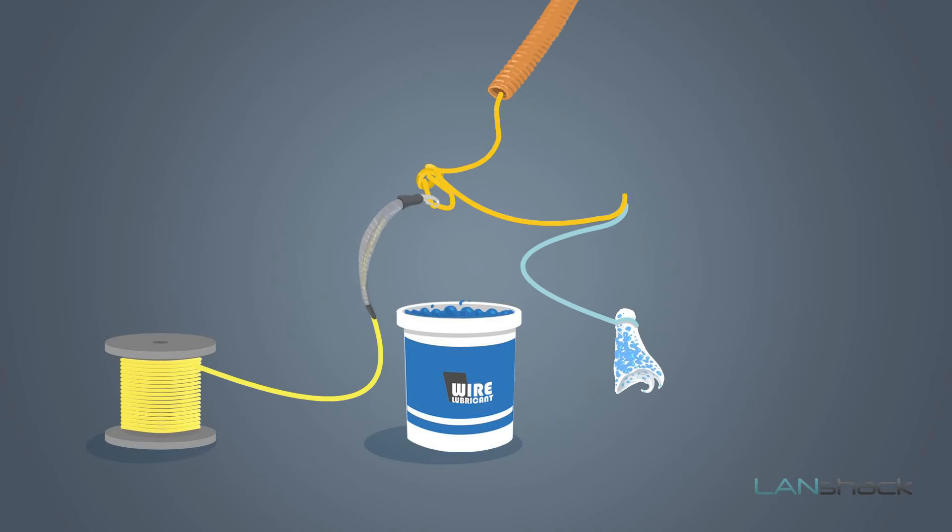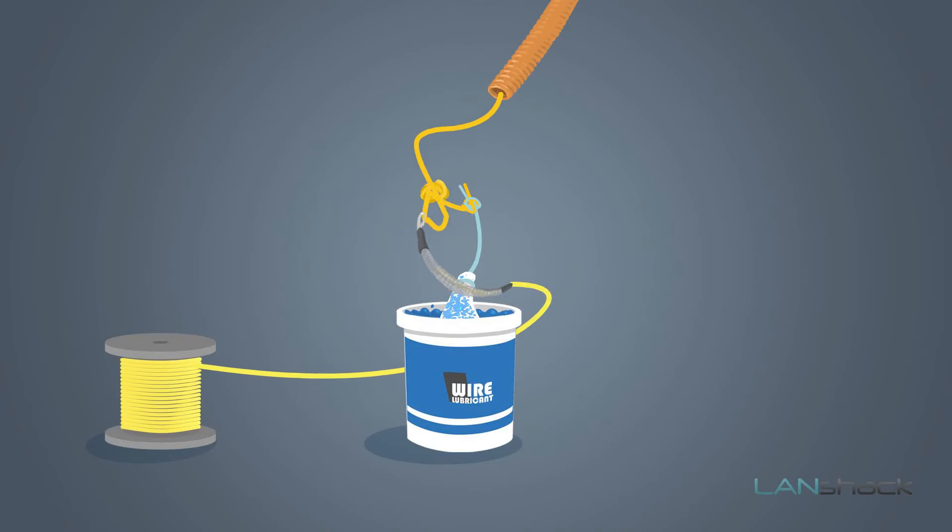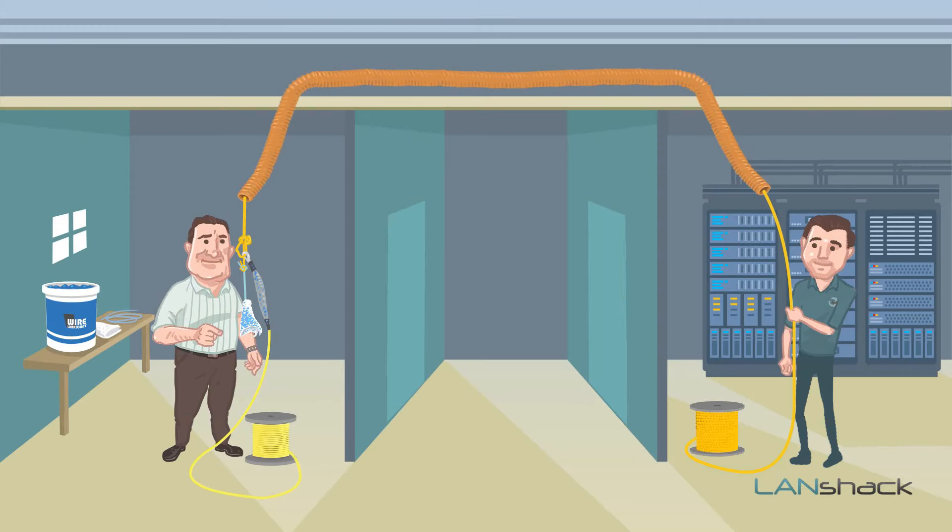Attach the lubricated rag onto the trailer rope and then dip the rag again into the lubricant and lubricate everything, including the pulling eye. Pull the rope on the other side for the third time.